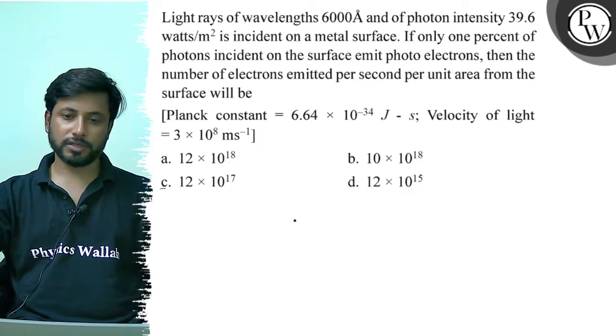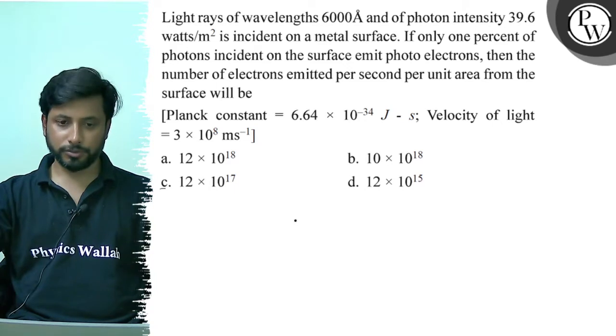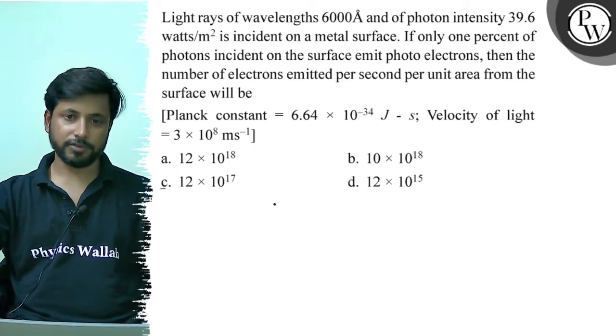Planck constant is 6.64 into 10 to the power minus 34 joule second, velocity of light 3 into 10 to the power 8 meter per second. Option A: 12 into 10 to the power 18. Option B: 10 into 10 to the power 18. Option C: 12 into 10 to the power 17. Option D: 12 into 10 to the power 15.